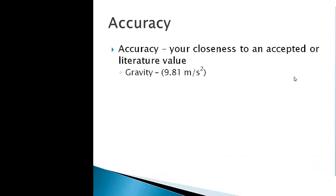First thing is accuracy. Accuracy is your closeness to an accepted or literature value. For example, gravity has a value of 9.81 meters per second squared. So if you do a pendulum lab for me, how close did you get to that 9.81? You do a different lab, say a water droplet, how close did you get to that 9.81? One of the labs you'll be doing for me is finding the density of copper. Copper has a density of 8.96. If you do a couple different trials, how close are you to that 8.96?